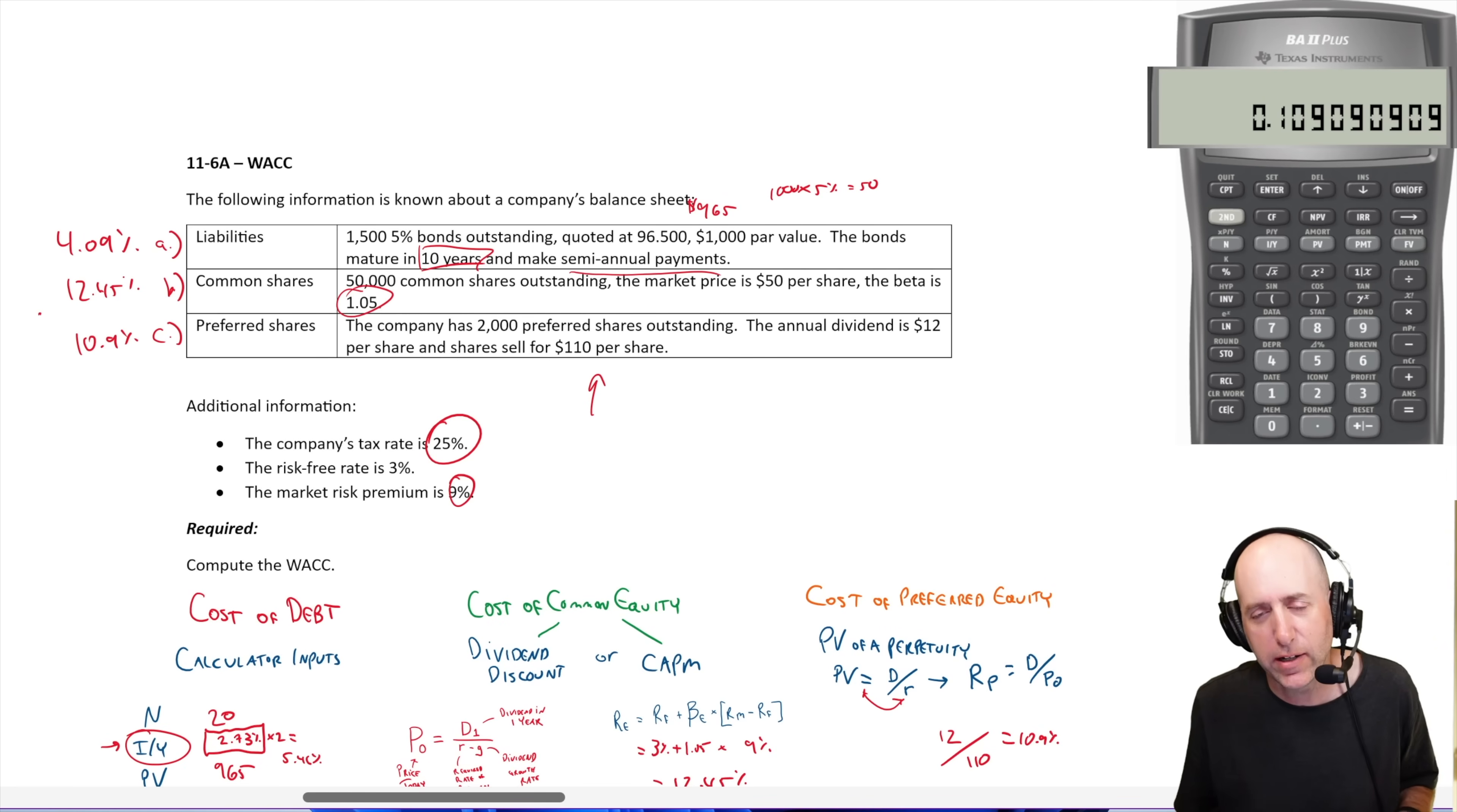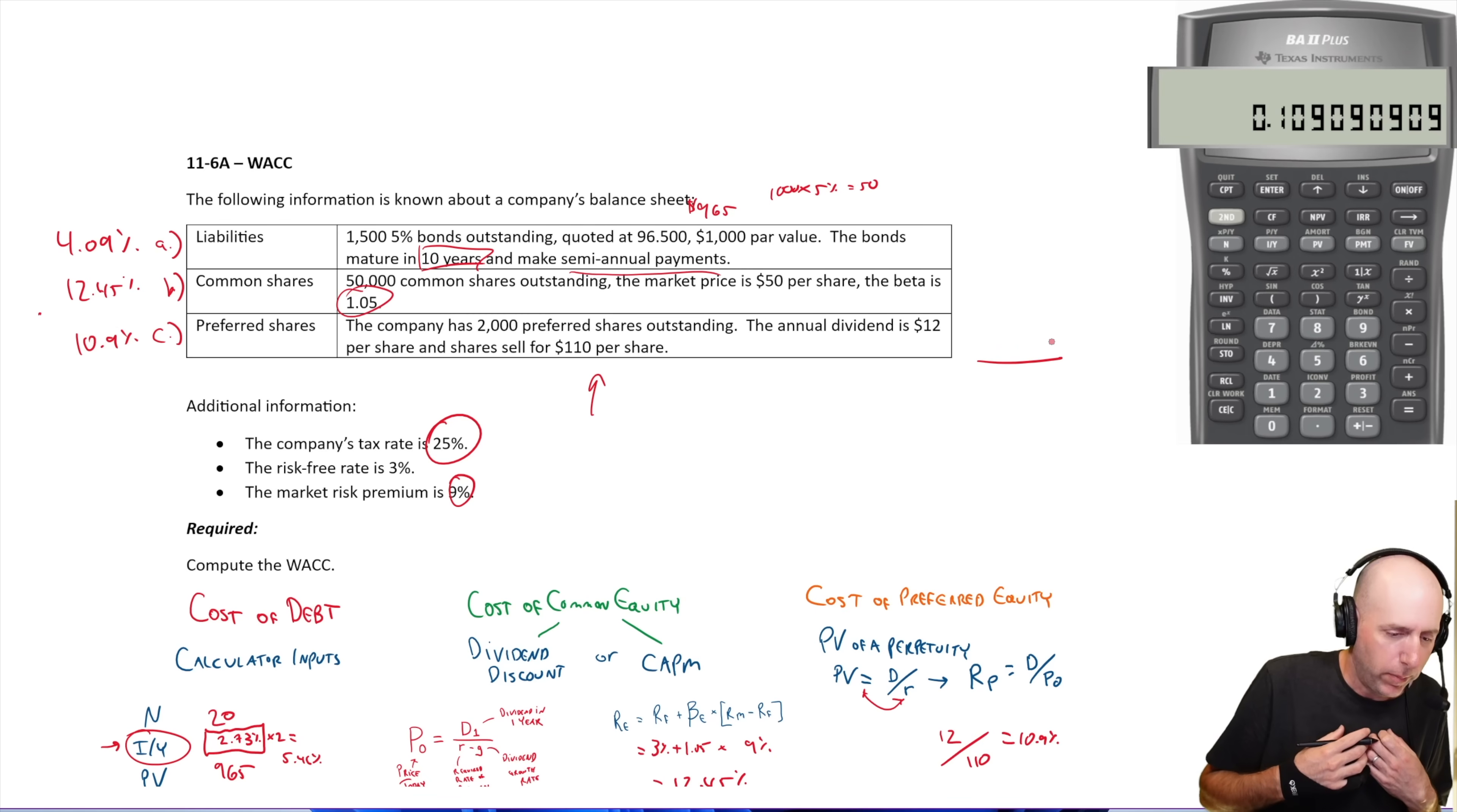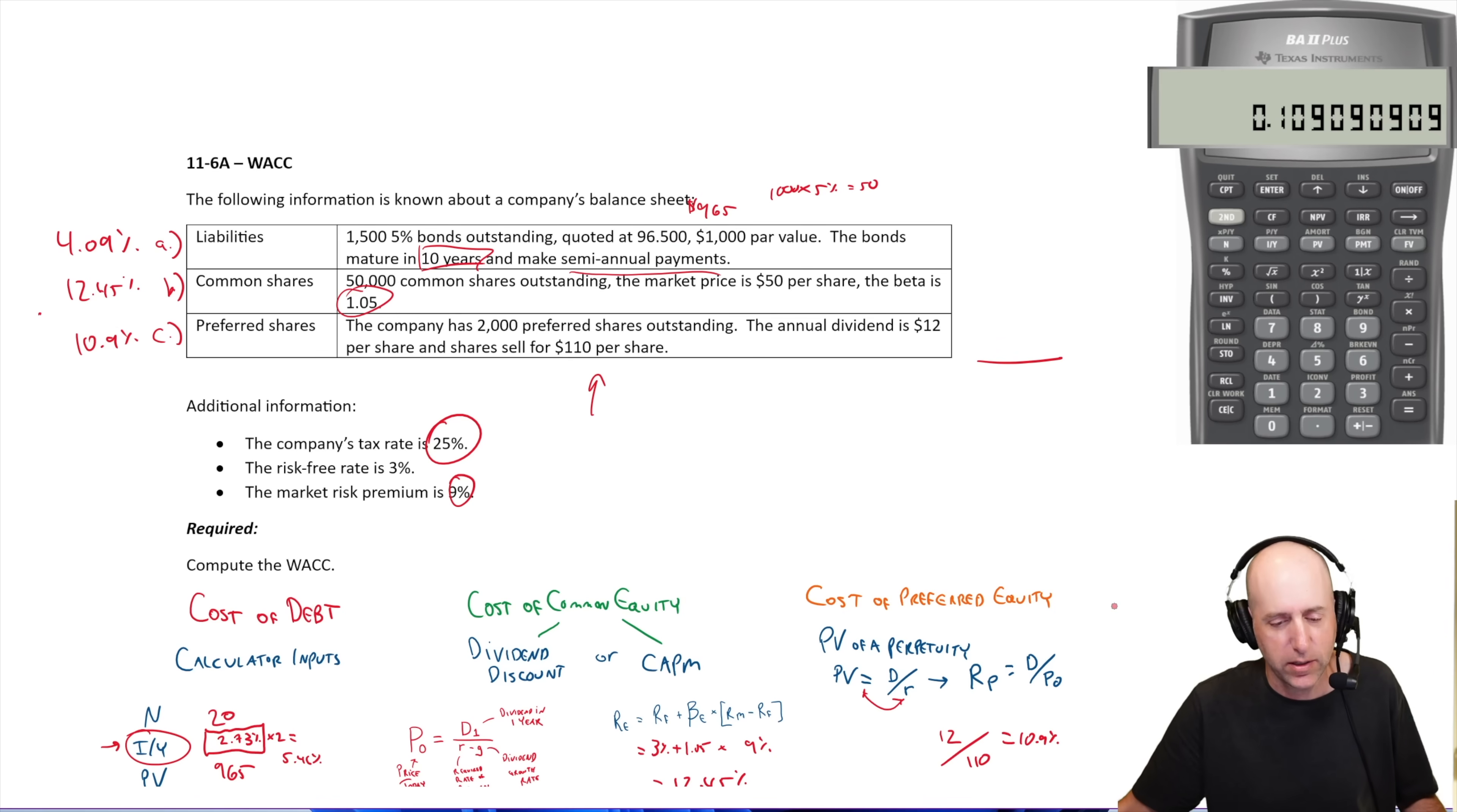So the next step in calculating the weighted average cost of capital is to calculate the relative weights in our portfolio or not our portfolio, but you know, in our debt and equity portion of our balance sheet. So let's figure out the size of that portion of our balance sheet. How many dollars do I have in bonds? How many dollars in common shares and how many dollars in preferred equity? So I have 1500 bonds. They're quoted at 96.5. So I have 1500 bonds. That's value today is $965 each. I have $1,447,500 in bonds. I have 50,000 shares. The value of the shares is $50, $2.5 million in shares. And in preferred shares, 2000 preferred shares at $110 per share, $220,000 of preferred shares.